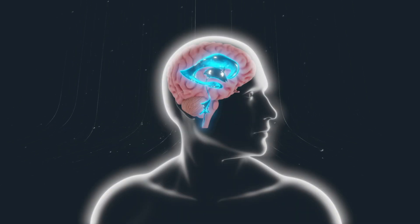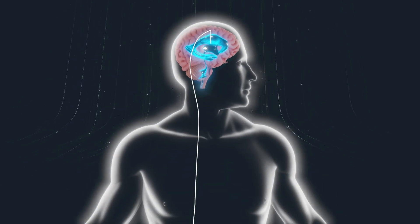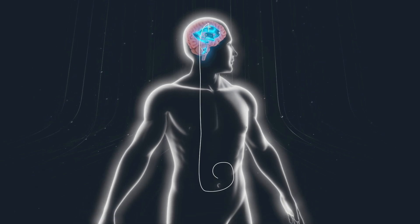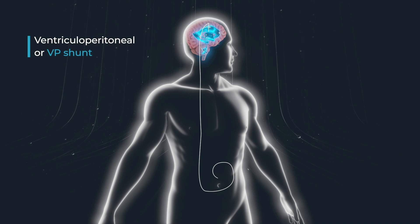Tubing from the valve is most commonly placed in one of three areas in the body. The first is into the abdominal cavity, also known as the peritoneal space. This is called a ventriculoperitoneal or VP shunt.